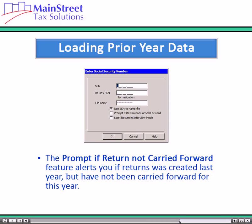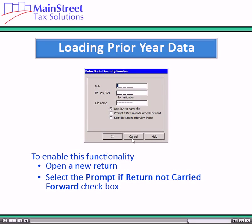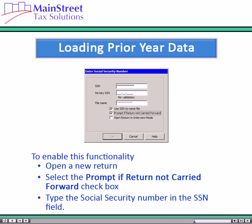The Prompt if Return Not Carried Forward feature alerts the preparer if a return was created last year but has not been carried forward for this year. The first time you click on the Social Security Number dialog box that opens when you click Start a New Return from the Software Homepage, type the Social Security Number in the Social Security Number field. The software scans the prior year directory to see if a return with this Social Security Number existed.